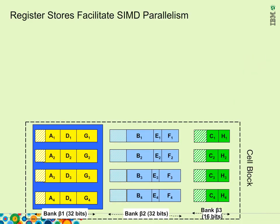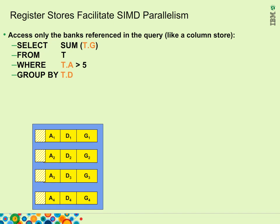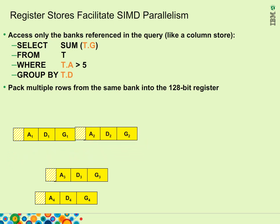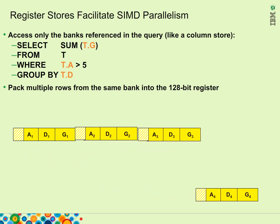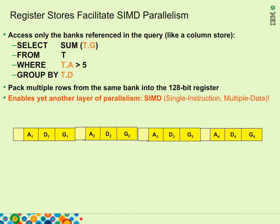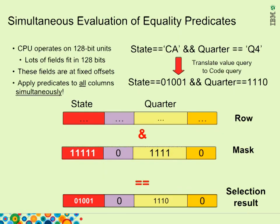Single instruction multiple data (SIMD) parallelism is used with IWA to further exploit parallelism with columnar technology. In this example, the query only touches columns A, D, and G from table T. Given that IWA groups columns into banks, it is able to use vertical partitioning and load the register with multiple rows of columns A, D, and G into the 128-bit register, processing multiple rows in a single instruction. This shows how IWA can do simultaneous evaluation of equality predicates, evaluating compressed encoded values without the need for uncompression and recompression of data.